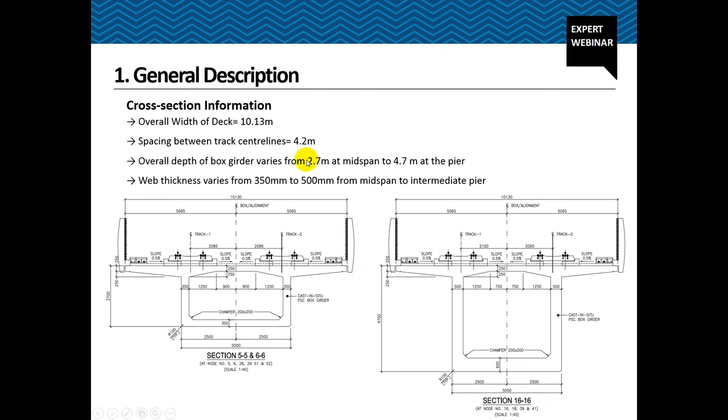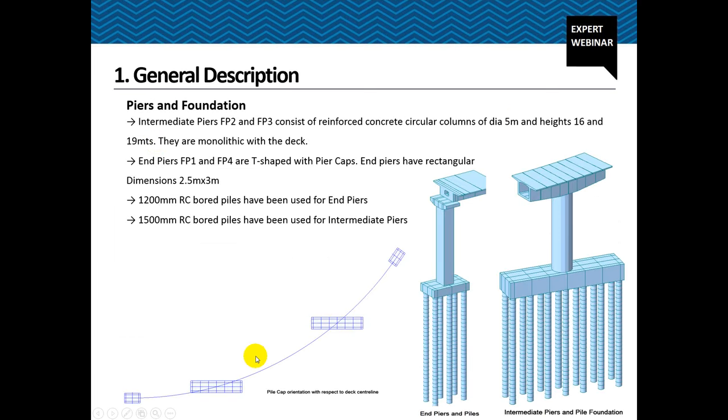The piers and foundations are mostly columns, single columns. The intermediate piers are circular columns of 5 meter diameter and typically heights vary from 16 to 19 meters. End piers FP1 and FP4 are rectangular in cross section and have a pier cap at the top to support the deck. The piles are also having different diameters under different piles. So the heavier loads will come on the FP2 and FP3. So they have a larger diameter pile of 1.5 meters.